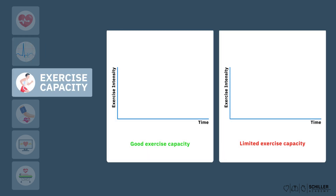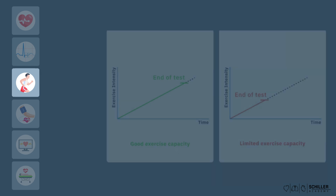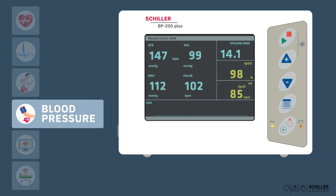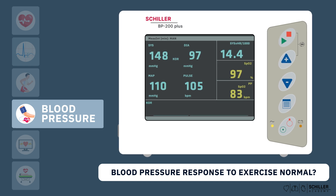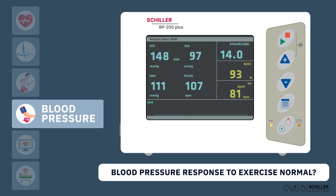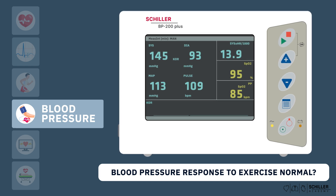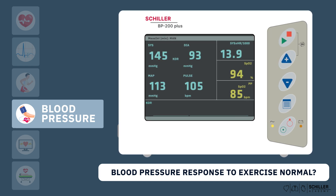The level of physical exertion achieved during the stress test is an important indicator of cardiovascular fitness and health. The patient's ability to reach the target heart rate and sustain exercise can provide insights into their overall cardiac function. Monitoring blood pressure during exercise helps identify abnormal blood pressure responses that could suggest underlying cardiovascular problems.